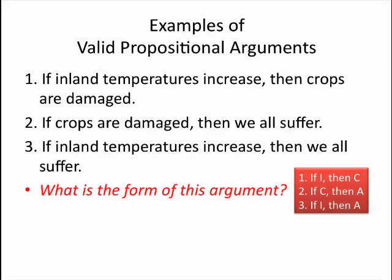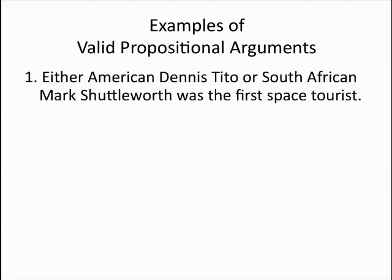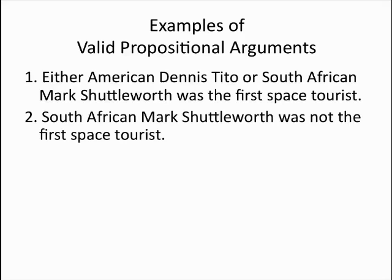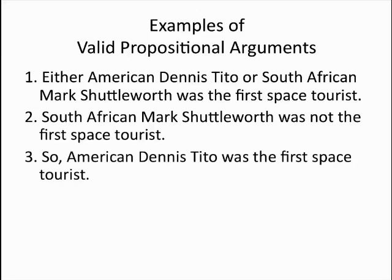Here's another valid propositional argument. Premise one, either Dennis Tito or South African Mark Shuttleworth was the first space tourist. Premise two, South African Mark Shuttleworth was not the first space tourist. What conclusion can you infer from this, validly? Namely, this. So, American Dennis Tito was the first space tourist.